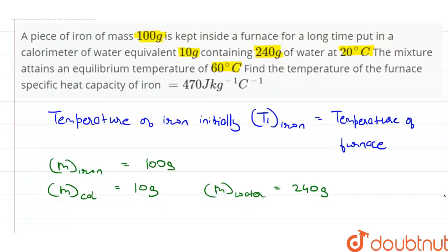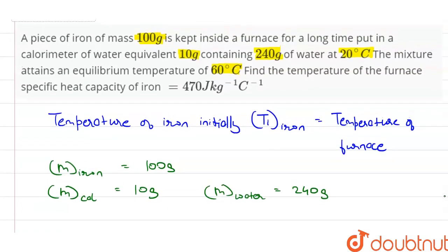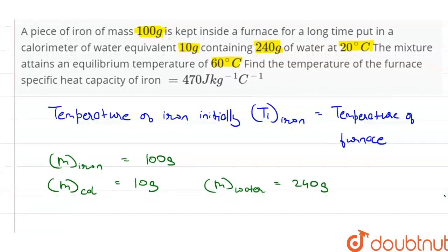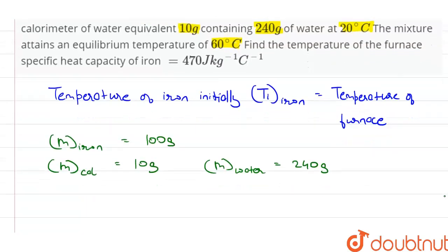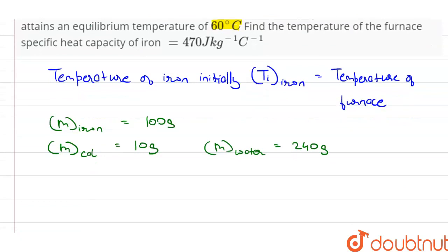When the hot iron is put inside the calorimeter, its heat energy is given to the water and the calorimeter. Therefore, iron will lose the heat and the calorimeter and the water will gain heat.